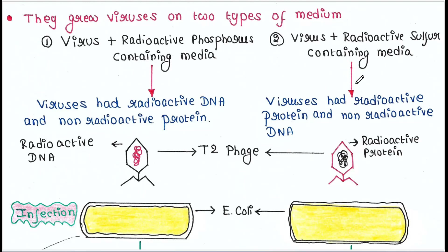In the second set of experiments, they grew viruses on a radioactive sulfur-containing medium. Here all the viruses had radioactive protein and non-radioactive DNA, since sulfur is a constituent of protein and it was radioactive, so all the viral proteins were radioactive.